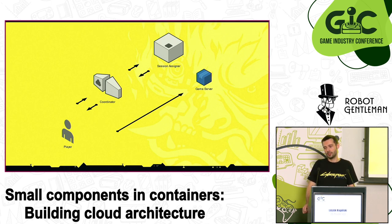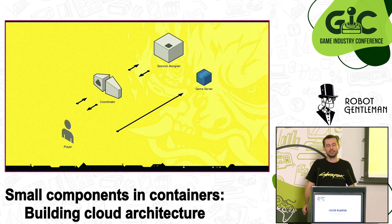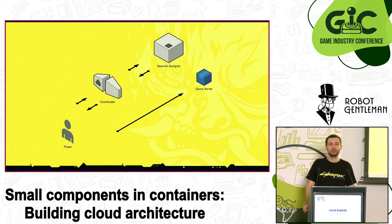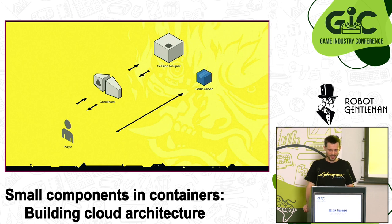That was the initial structure of our services. We used the idea of a front controller — a coordinator — as the point of contact between the game client and our service mesh. This coordinator would talk to the session assigner, which had knowledge of how many servers are currently available. Since it was an experiment, we didn't know if a single server would serve single or multiple sessions — hence we called it a session assigner, not a server assigner.